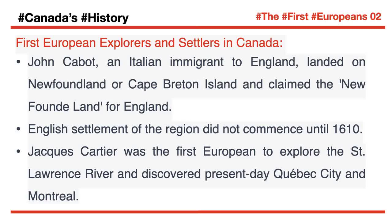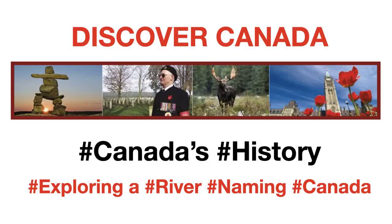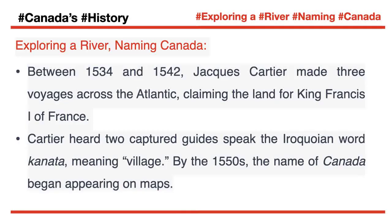English settlement did not begin until 1610. Jacques Cartier was the first European to explore the St. Lawrence River and to set eyes on present-day Quebec City and Montreal. Between 1534 and 1542, Jacques Cartier made three voyages across the Atlantic, claiming the land for King Francis I of France. Cartier heard two captured guides speak the Iroquoian word Canada, meaning village. By the 1550s, the name Canada began appearing on maps.